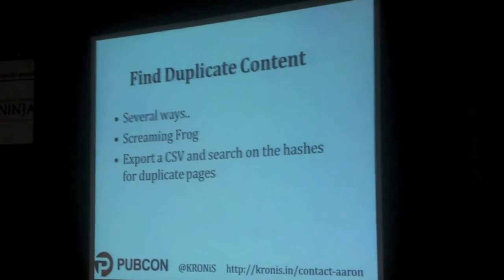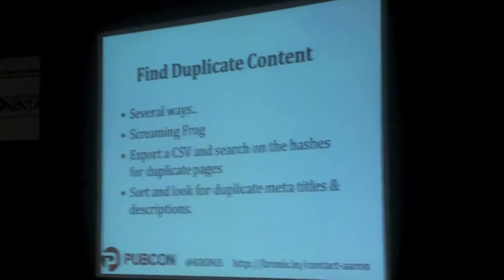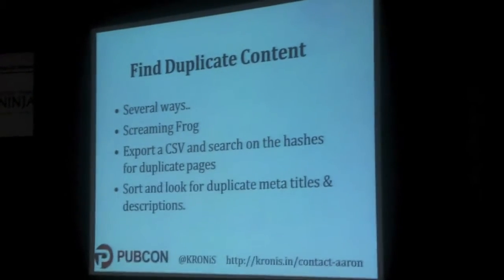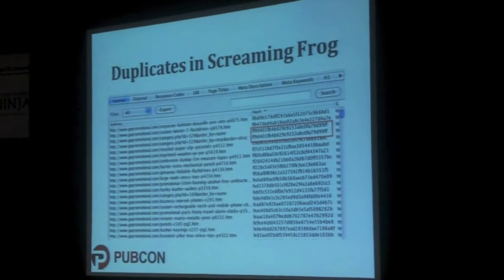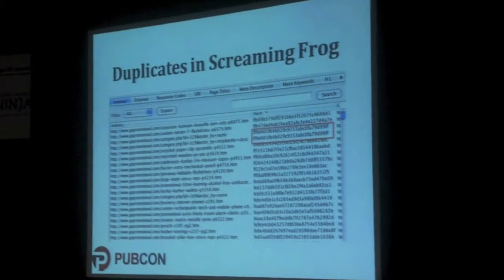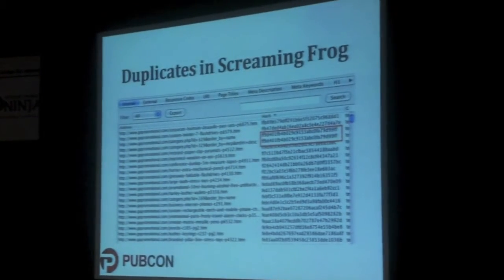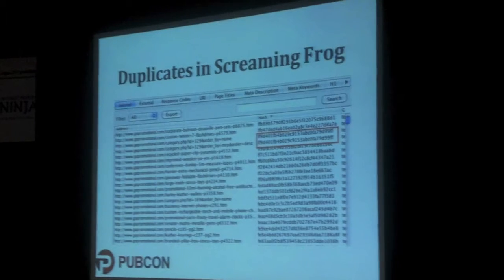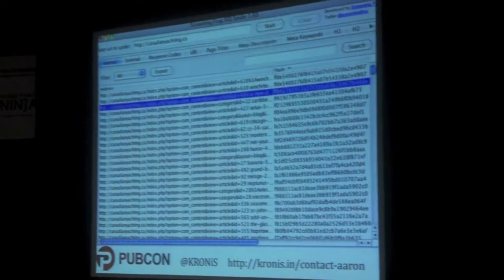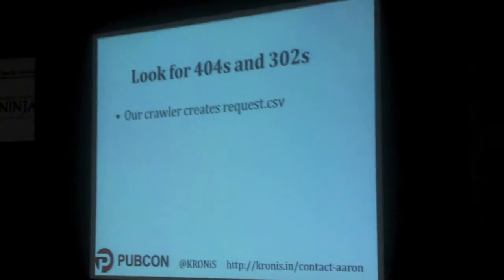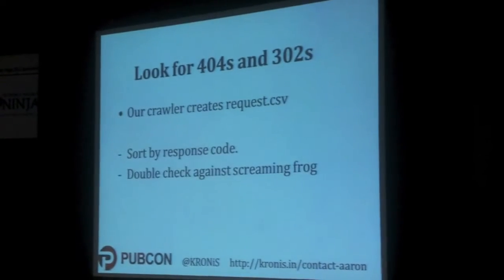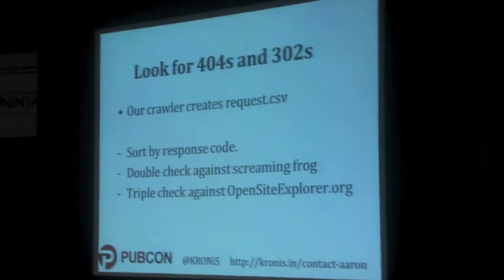Find duplicate content. You can use Screaming Frog and export to CSV — you can sort it to look for duplicate meta titles and descriptions. If you want to find pages that are completely full of duplicate content, there's a hash: find the hash, sort on it, and if two are the same, those pages are duplicates. The problem is probably pagination or something similar. Look for 404s and 302s, and know why you'd choose 301 redirects. Sort by response code to see which ones are failing. Triple-check everything with Open Site Explorer.